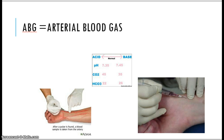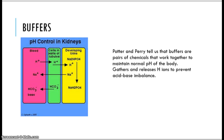ABGs — arterial blood gases — are drawn out of an artery. The main purpose is to see how well the blood is carrying oxygen to the tissue, not the return trip in the venous system. Arterial blood gases look at O2 concentration, CO2, bicarbonate HCO3, and the acid-base balance in the blood going to the tissues. How well are the lungs working to oxygenate the tissues and the hemoglobin?